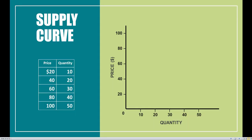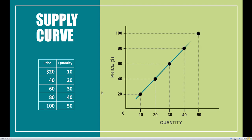When we build up or derive the supply curve, we take a very similar approach to the demand side. We have a price and quantity combination, and for every price and quantity combination, we can plot this on our Cartesian plane — price on the vertical axis and quantity on the horizontal axis. At a price of $20, firms are willing to supply 10 units. At a price of $40, they'll supply 20 units. At $60 it's 30, $80 is 40, and $100 is 50. Plot those points down and connect the dots. This upward sloping line is our supply curve.